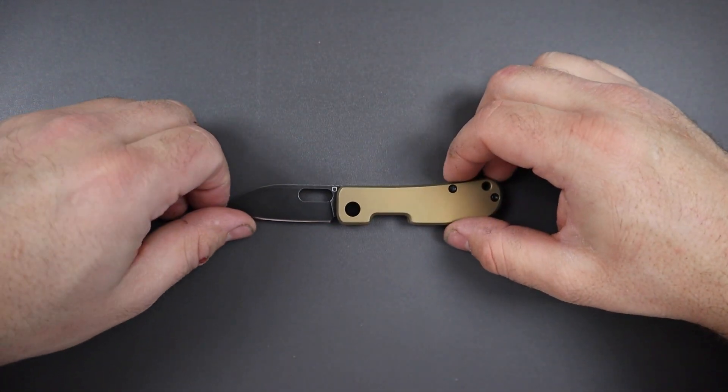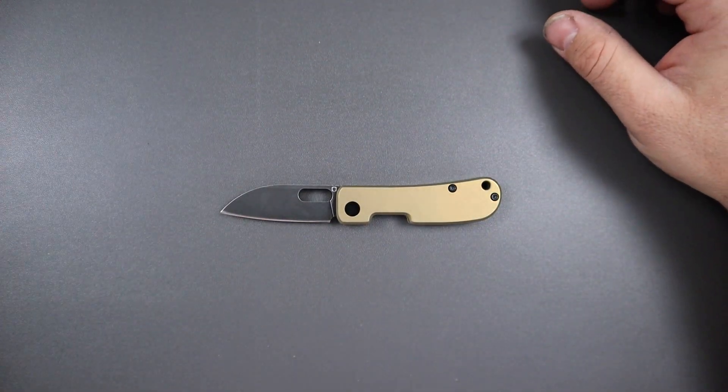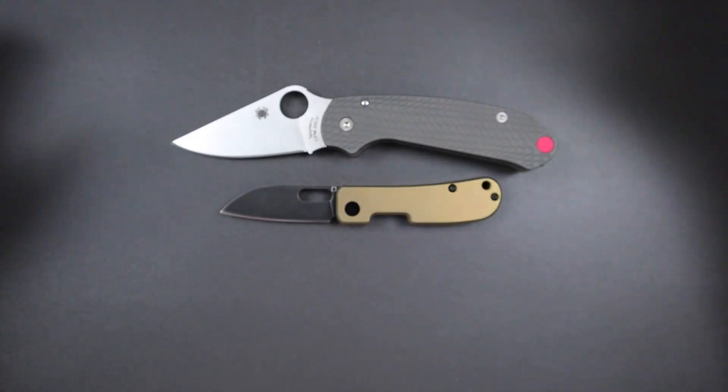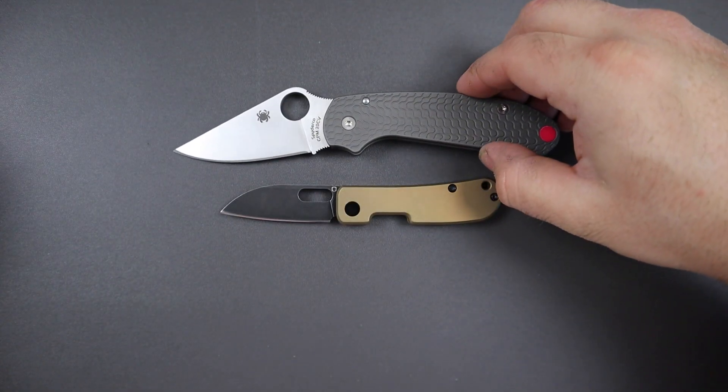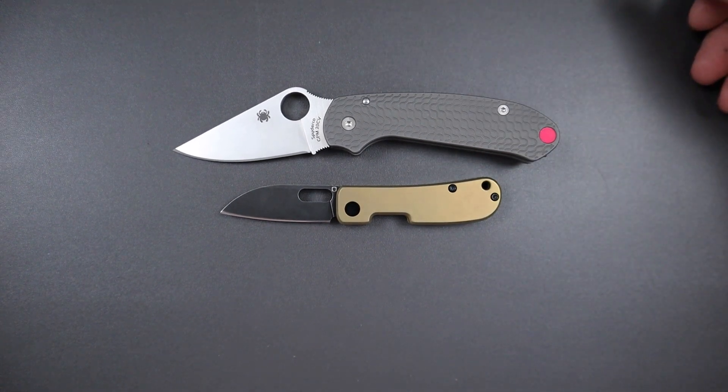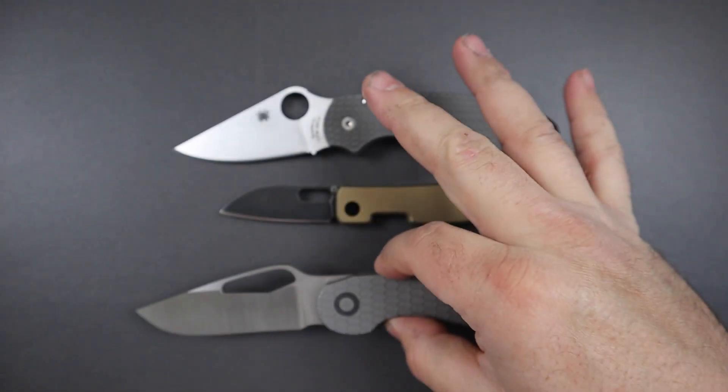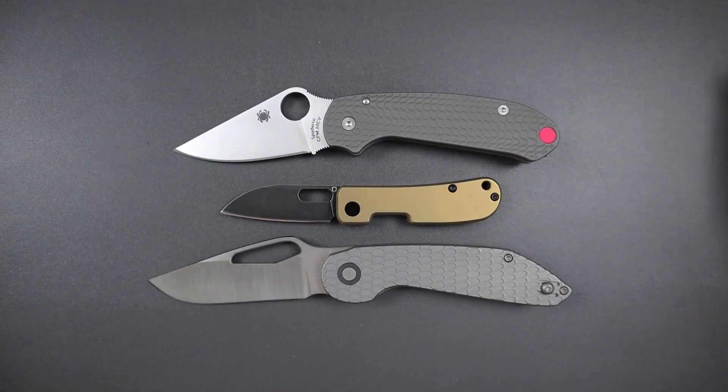Here it is next to a Para 3. So there you go, Para 3 by most people's standard is kind of a smaller knife and it definitely dwarfs the Vanish. Here it is next to a Left Avant which just showed up a few days ago, my pre-order. So very happy to receive that.